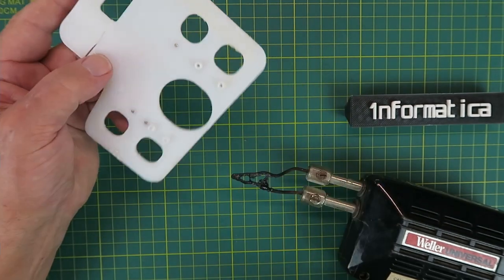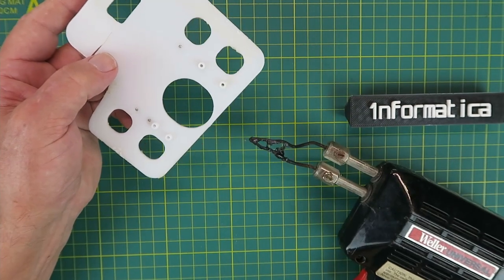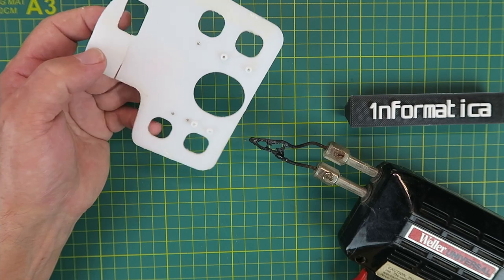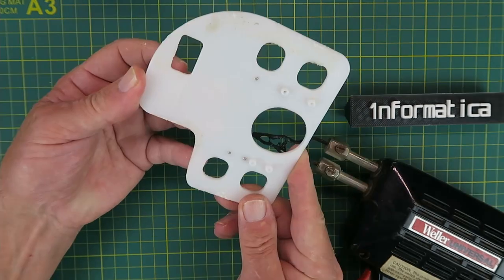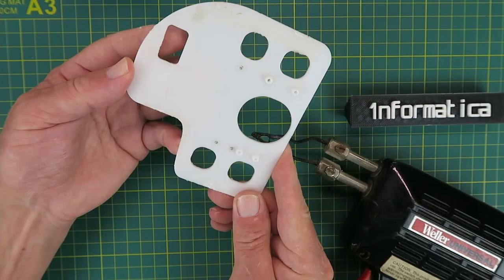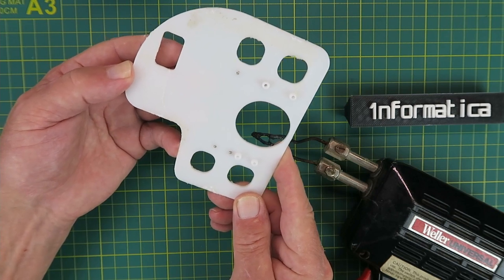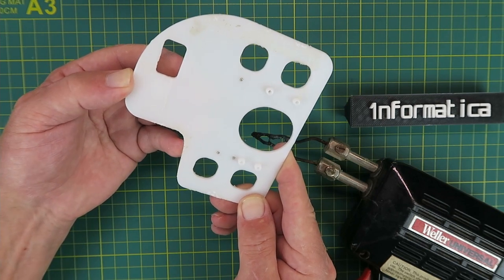If glue is not an option, then what I'm going to try today is using the soldering iron to weld it back together. This is going to be my first attempt at this. As I like to say, I'll make the mistakes so you don't have to. Let's see how we get on.